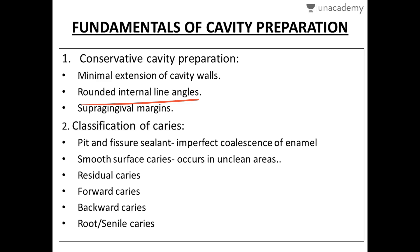Margins should always be supragingival. There are three types of margins: supragingival, where the cavity preparation is above the gingival margin; it can be apical to the contact area but coronal to the gingival, and should be 3 mm above the alveolar crest — especially in Class 2 preparations. Margins can also be gingival, contacting the gingival, or subgingival, extending deep into the gingival.